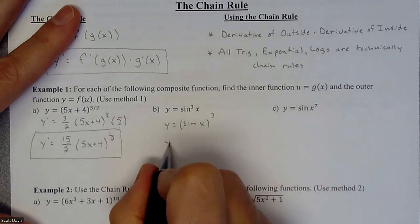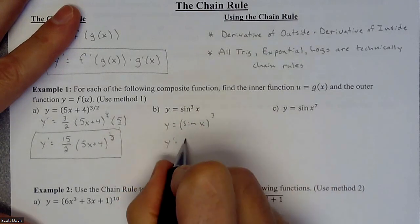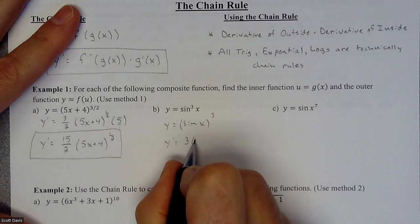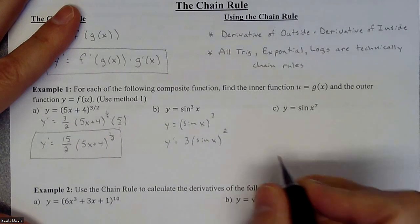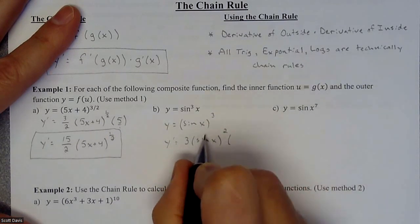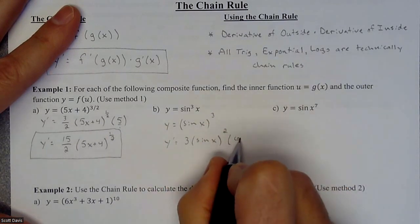So when we do our derivative, we're doing the derivative of the outside, not changing anything here, and then lose our power times the derivative of the inside. The derivative of sine is cosine.